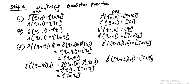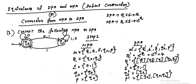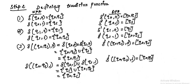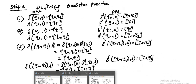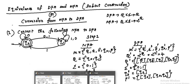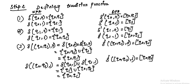In the second step, we define the transition functions del. In NFA, del of Q0 with input 0: look at the transition diagram — Q0 with input 0 goes to Q0 and Q1, and Q0 with input 1 goes to Q1. So del(Q0, 0) equals {Q0, Q1} and del(Q0, 1) equals Q1. In DFA, del dash of Q0 with input 0 equals {Q0, Q1}, and del dash of Q0 with input 1 equals Q1.